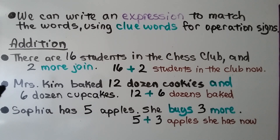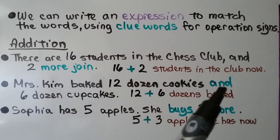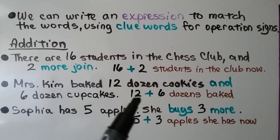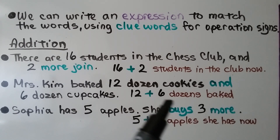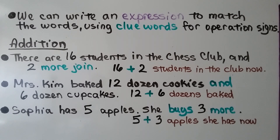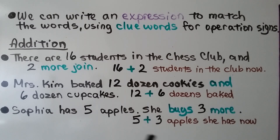Mrs. Kim baked 12 dozen cookies and 6 dozen cupcakes. Because it says 'and,' we write 12 plus 6 for the dozens that were baked. Sophia has 5 apples and she buys 3 more. Because she buys more, we do 5 plus 3 for the apples she has now.